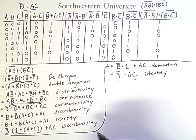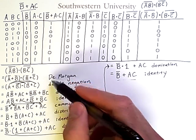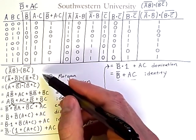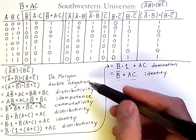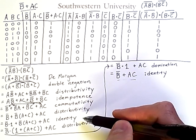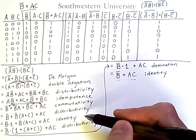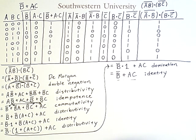So, this form of proof is known as a linear proof with a justification for each step. And each of the justifications is one of the logical identities, one of the laws of Boolean algebra.